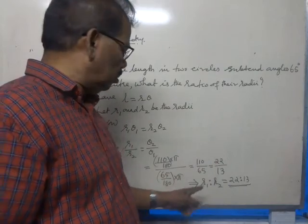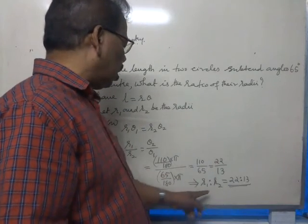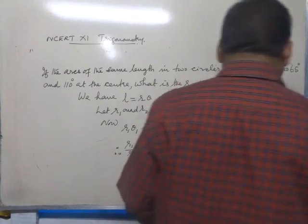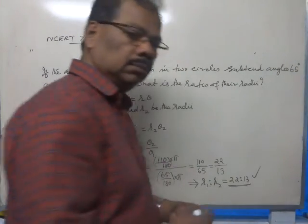Therefore, the ratio R1 to R2 is equal to 22 to 13. Great.